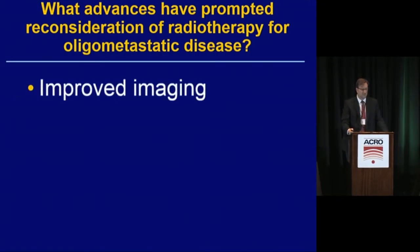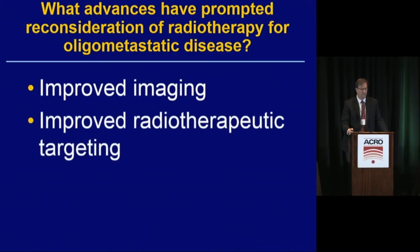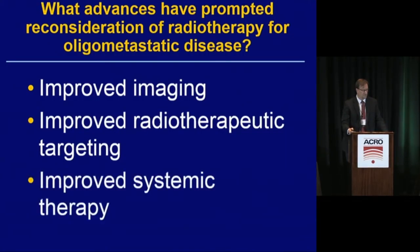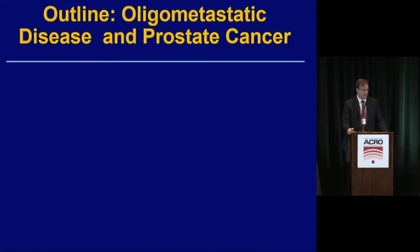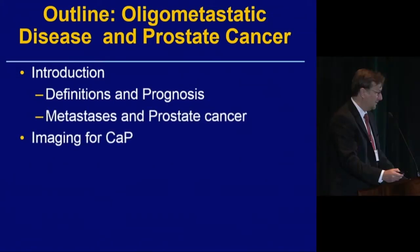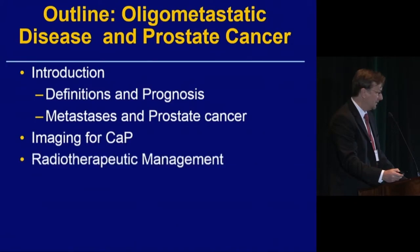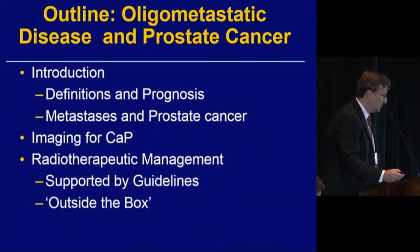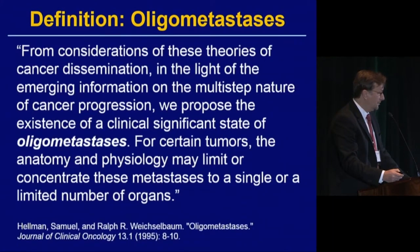Radiotherapy for oligometastatic prostate cancer is certainly something many people are talking about. Advances that have prompted reconsideration include improved imaging, improved radiotherapeutic targeting with fiducials, Calypso beacons, and cone beam CT, improved resolution of conventional scanning, and improved systemic therapy including newer androgen deprivation therapy agents such as abiraterone, enzalutamide, and others, as well as docetaxel earlier in the disease process.